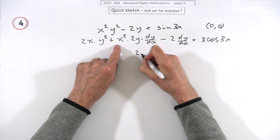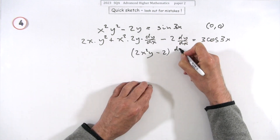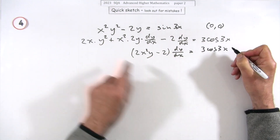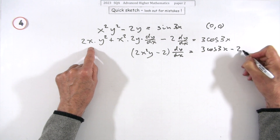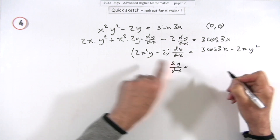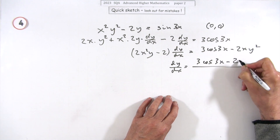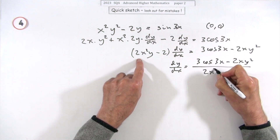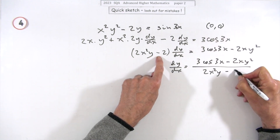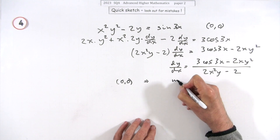Collecting the dy/dx terms: you have 2x²y minus 2 as the coefficient of dy/dx. Everything else goes to the other side: 3cos(3x) minus 2xy². So dy/dx equals (3cos(3x) minus 2xy²) over (2x²y minus 2).